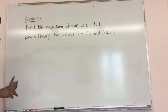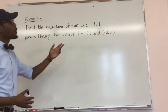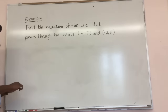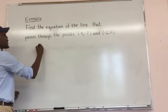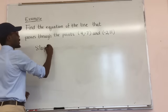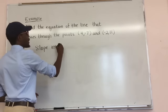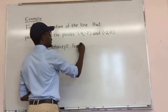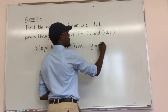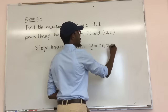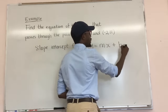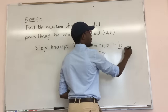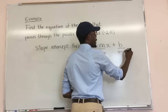We're going to try to find the equation of the line that passes through the points (4, -7) and (-2, 11). We're going to put our answer in slope-intercept form, which looks like Y = MX + B, where M is our slope and B is our Y-intercept.